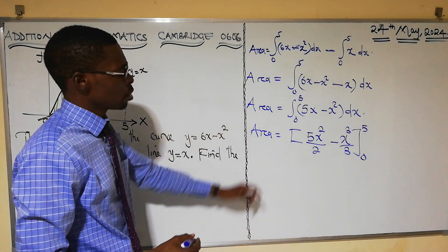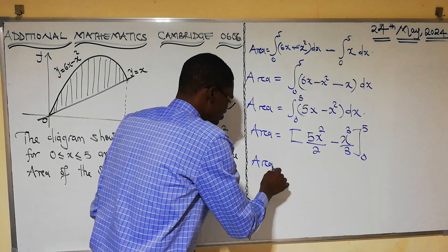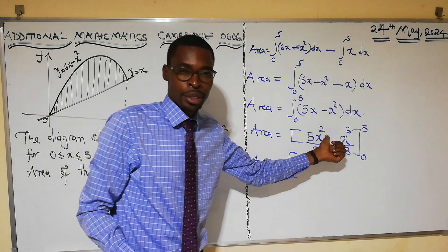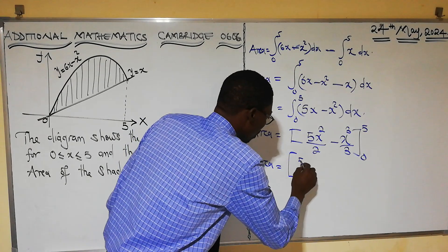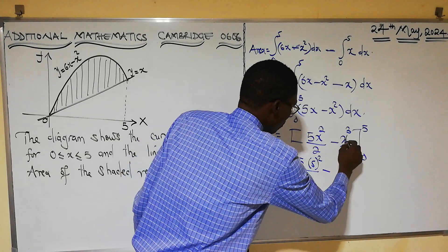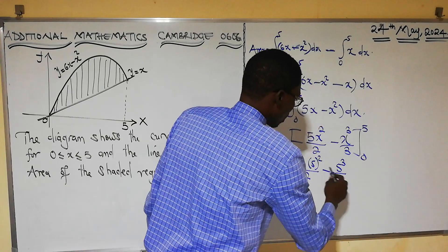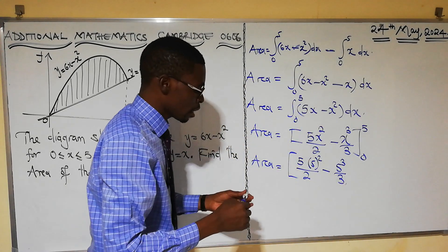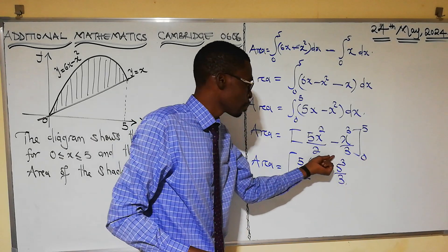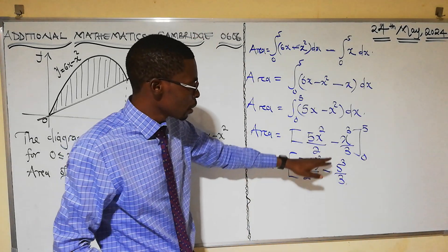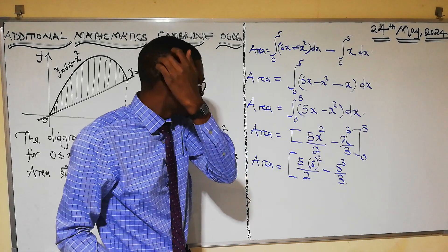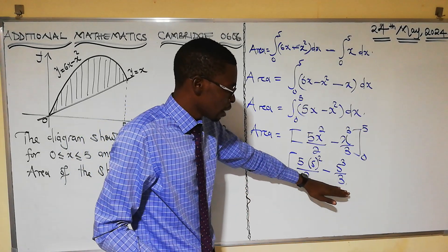Those are the ordinates of our integration. When you put 5 into this integral, you get 5 × 5² / 2 − 5³ / 3. When you put 0 into the integral, the value is just 0, because both terms become 0. So subtracting 0 from this just gives us what we have here.